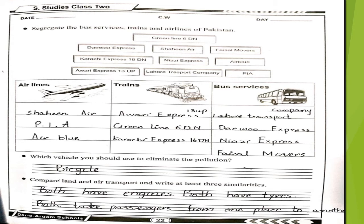Our last question on this page is to compare land and air transport and write at least three similarities. First, both have engines. Second, both have tires. Third, both take passengers from one place to another.